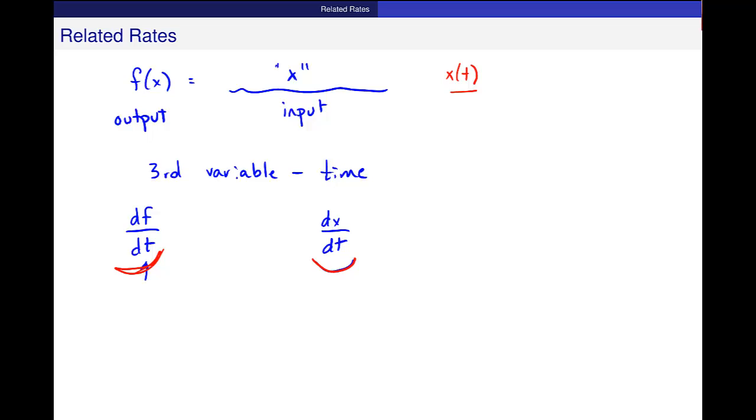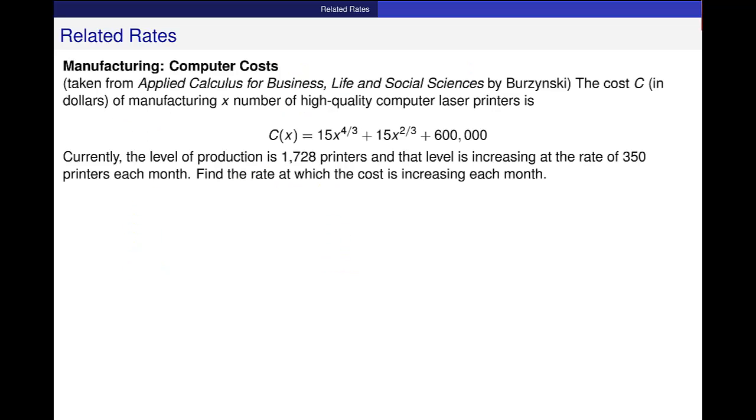So I have this example problem, and I just want to take a look at the language and some of the things that you might see. This is from your textbook, and it says the cost c in dollars of manufacturing x number of high quality computer laser printers. So first of all, I want to put down that the cost is represented by c of x. And that's just in plain dollars. And then x is the number of high quality, so it's some sort of number or quantity of laser printers. And it's given by this cost function. 15x to the 4 thirds, plus 15x to the 2 thirds, plus 600,000.